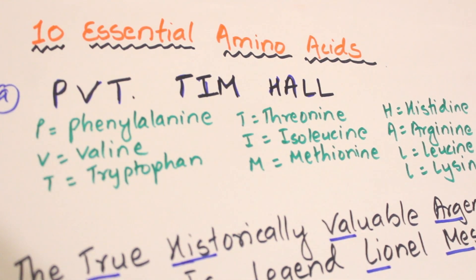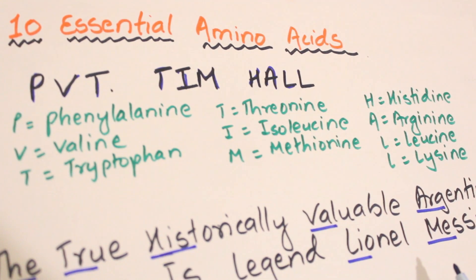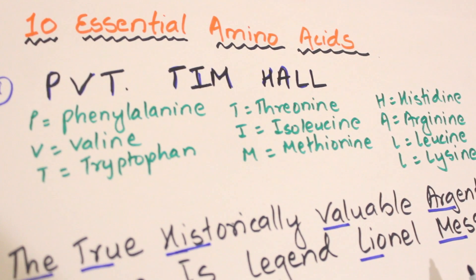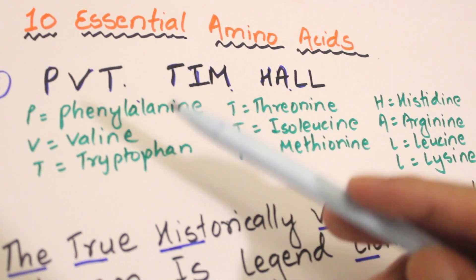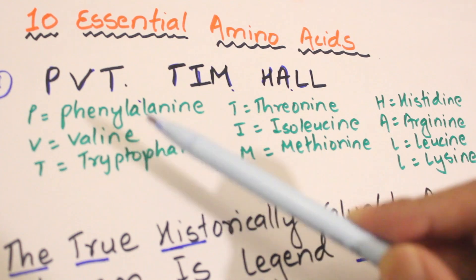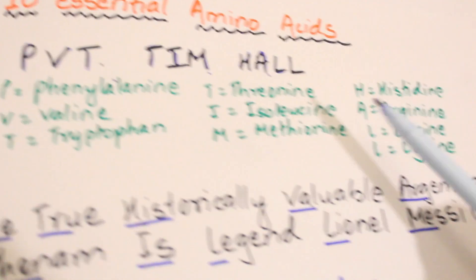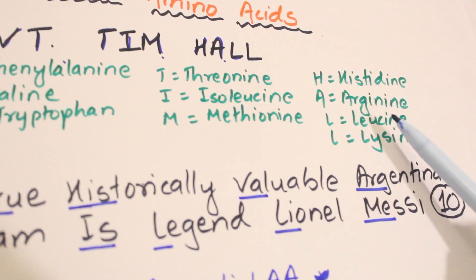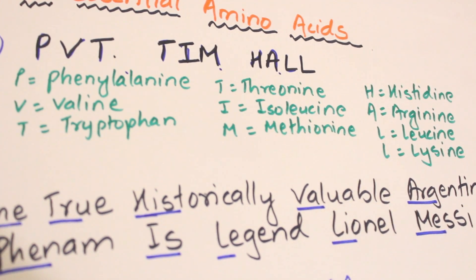Essential amino acids come through the diet. An easy mnemonic for remembering the 10 essential amino acids is 'PVT TIM HaLL': P for Phenylalanine, V for Valine, T for Tryptophan, T for Threonine, I for Isoleucine, M for Methionine, H for Histidine, A for Arginine, L for Leucine, L for Lysine.